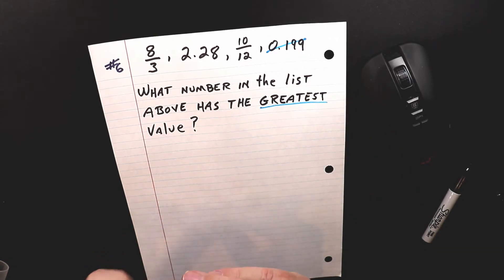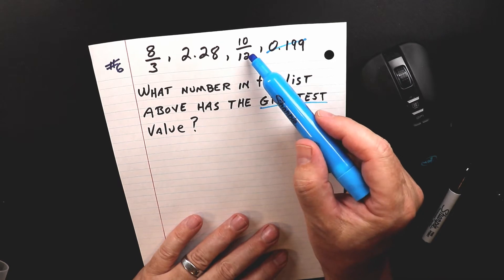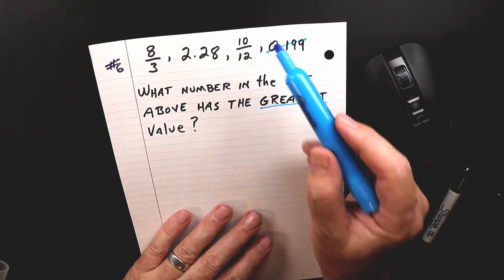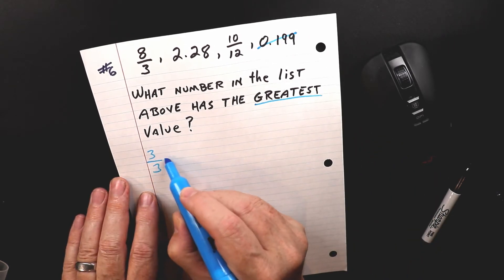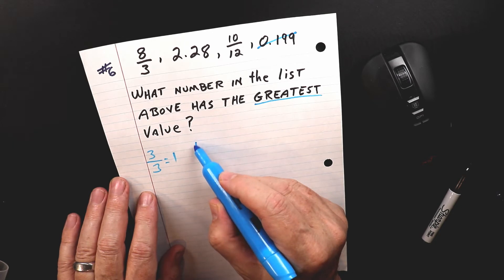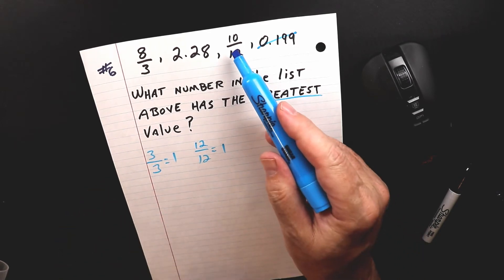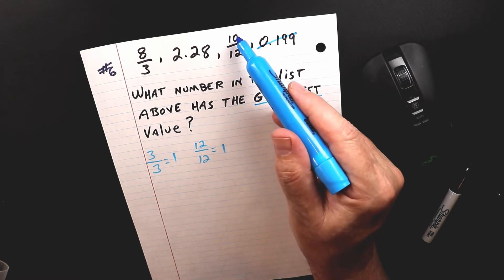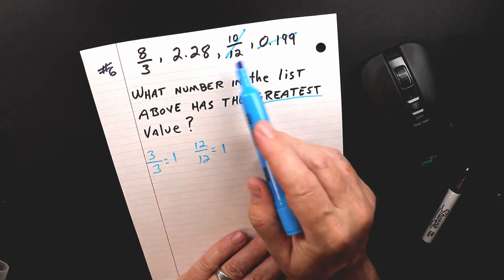Now if you remember earlier we were talking about fractions, and if we have the same number on the top and bottom it equals one. So 3 over 3 equals 1, right? 12 over 12 would equal 1. So in this case we could see that this number is also less than one because 10 is smaller than 12. So this one goes away too.